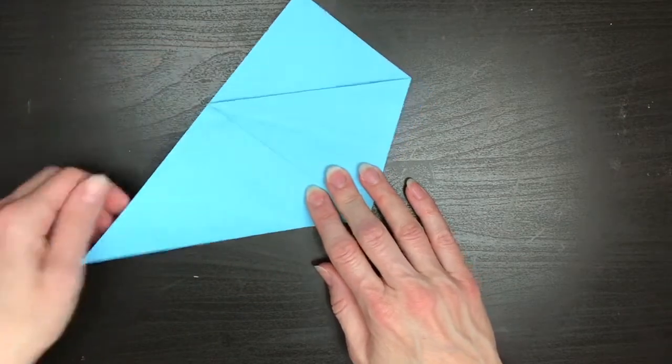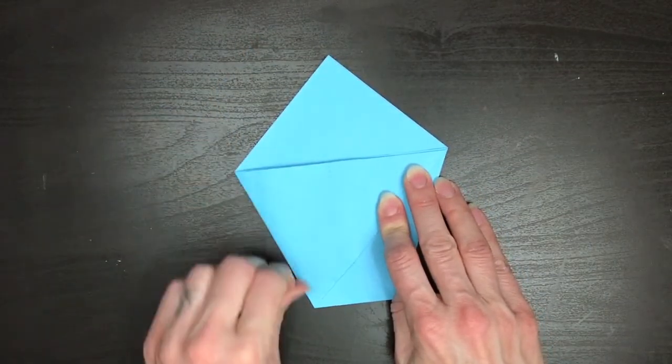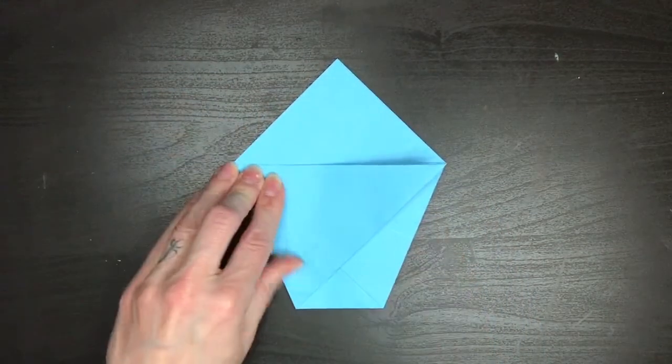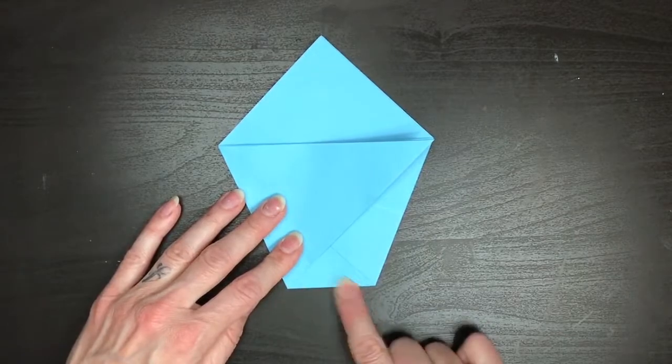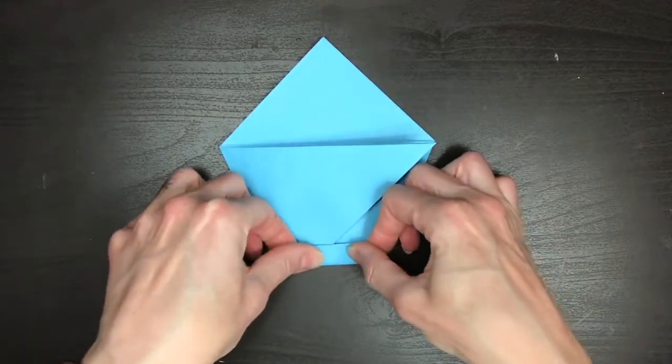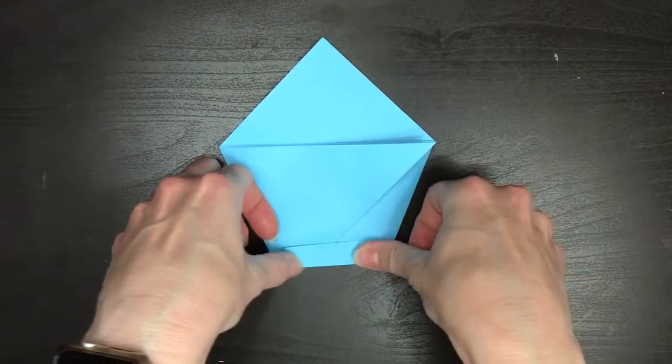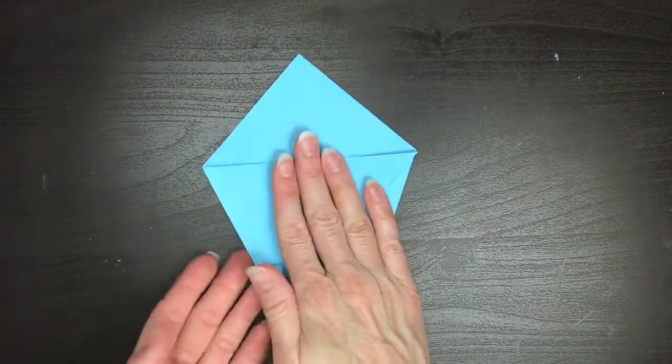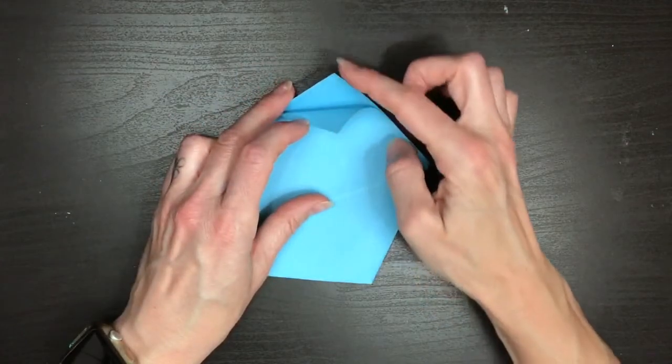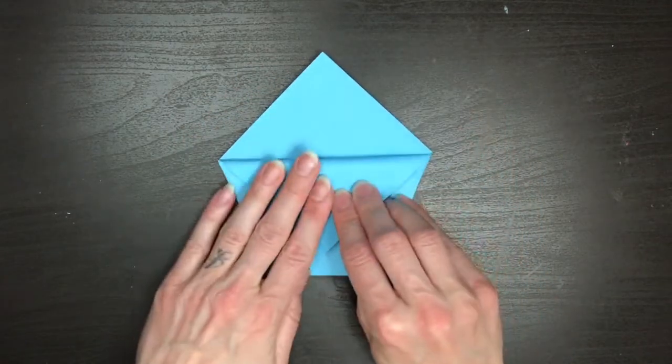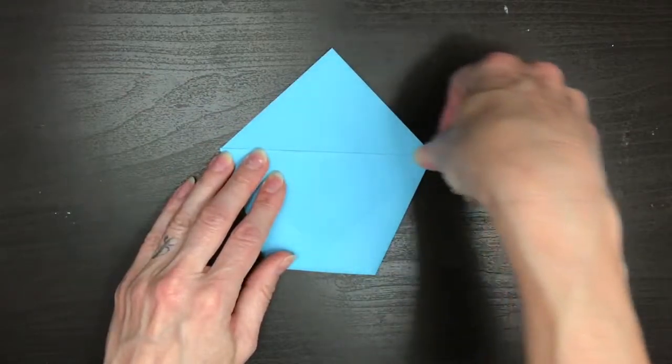Okay, now we're going to fold that bottom edge just a little bit up. It doesn't have to be any particular length. Just fold it up a little bit. Perfect. Now, flip the whole thing over. This is the front of your cupcake. Okay, so now, at the top, there are two layers of paper. Take just the first one and fold it down as far as you can without ripping it, of course. Fold it nice and flat. That fold's going to stay there.